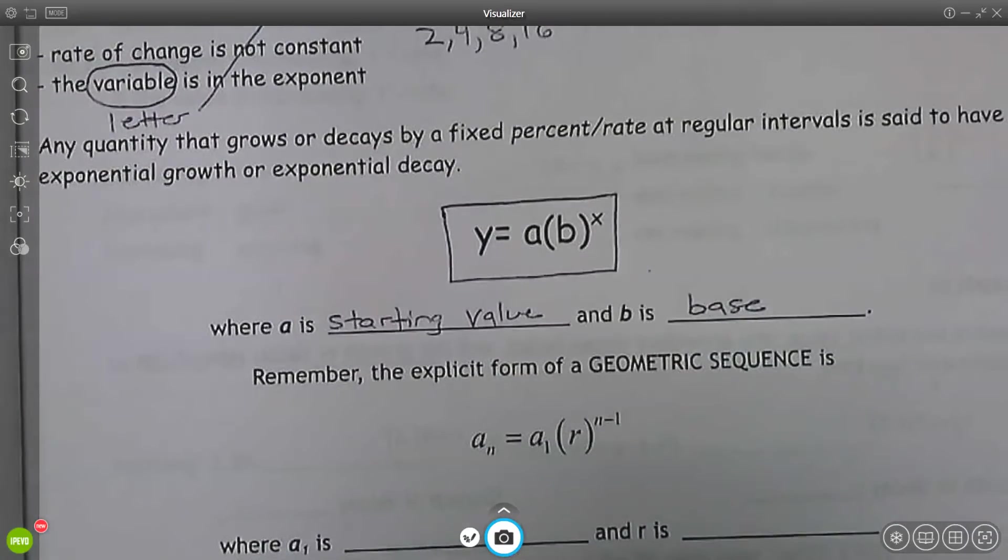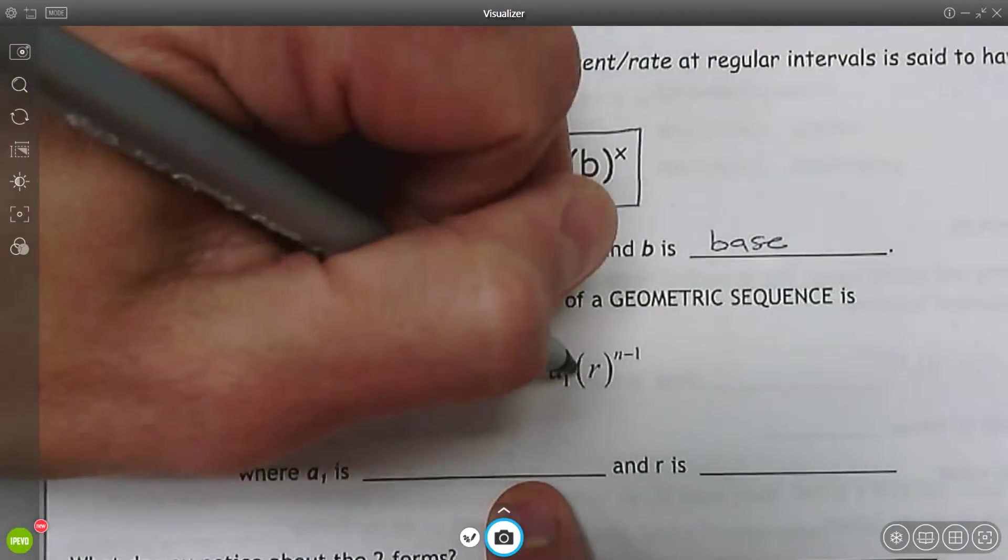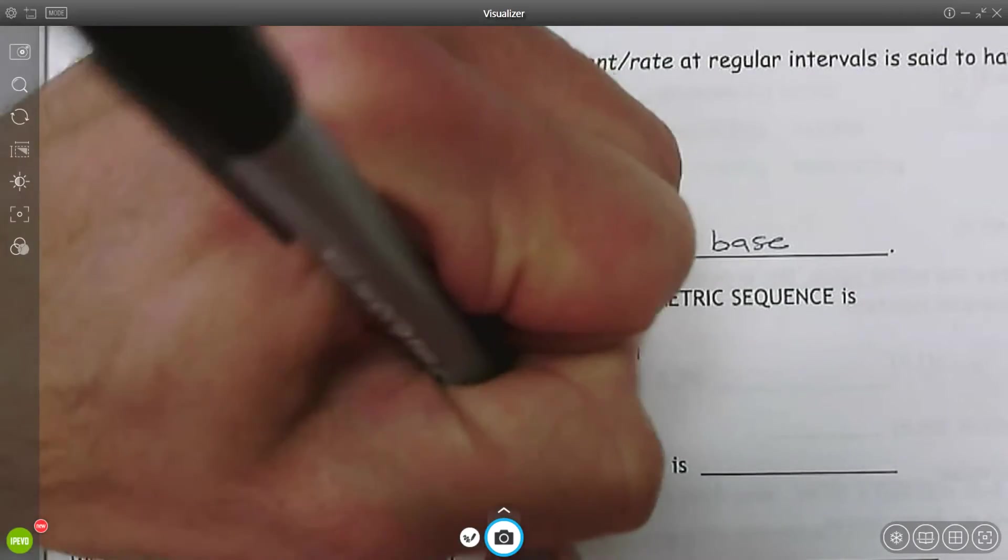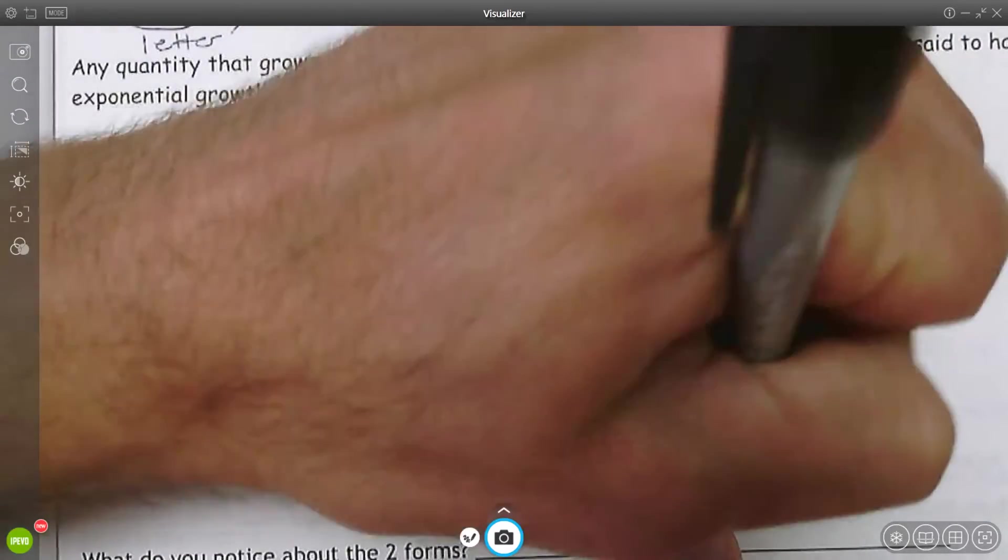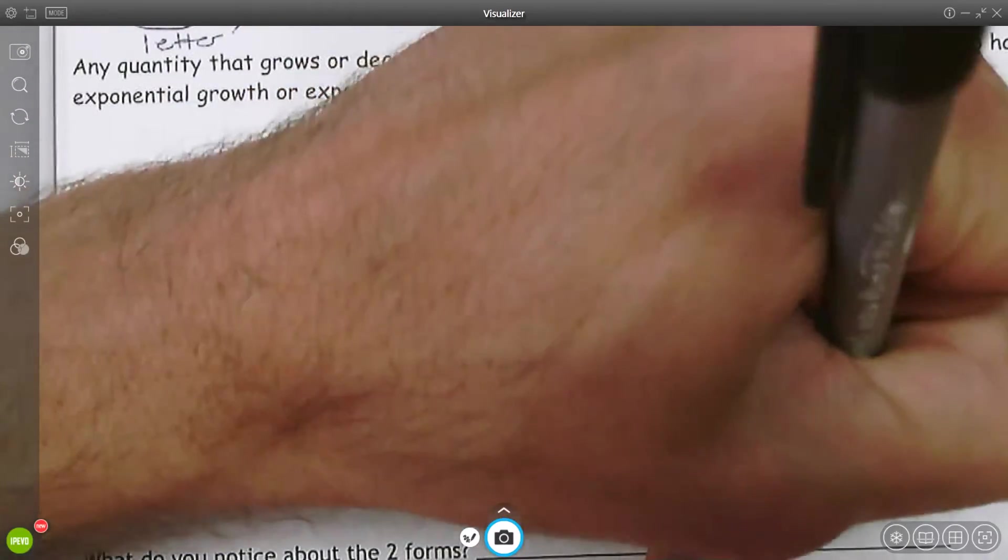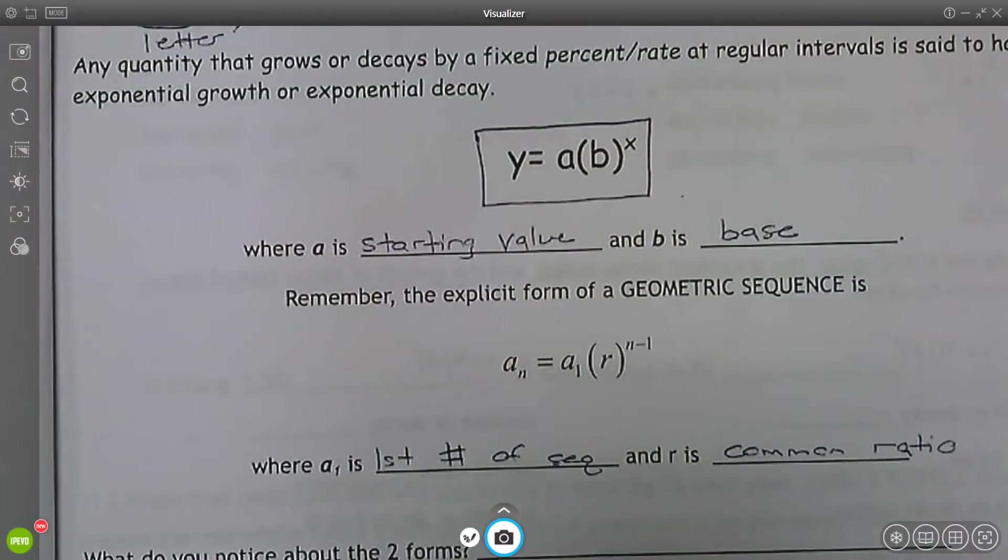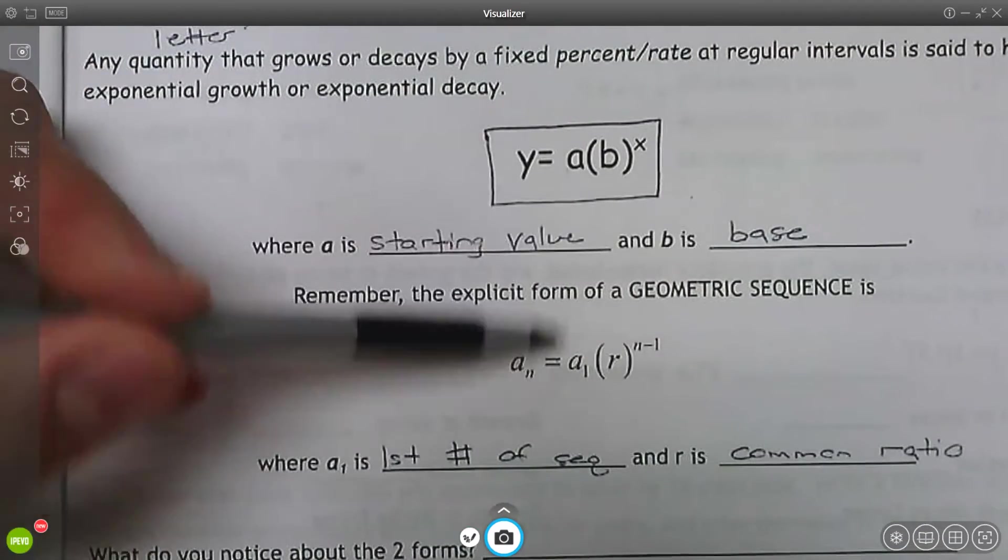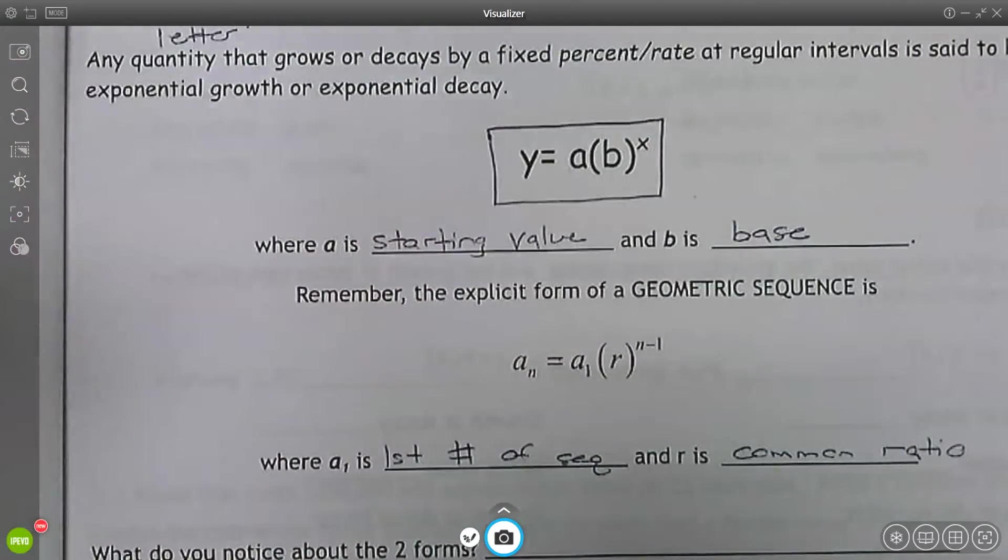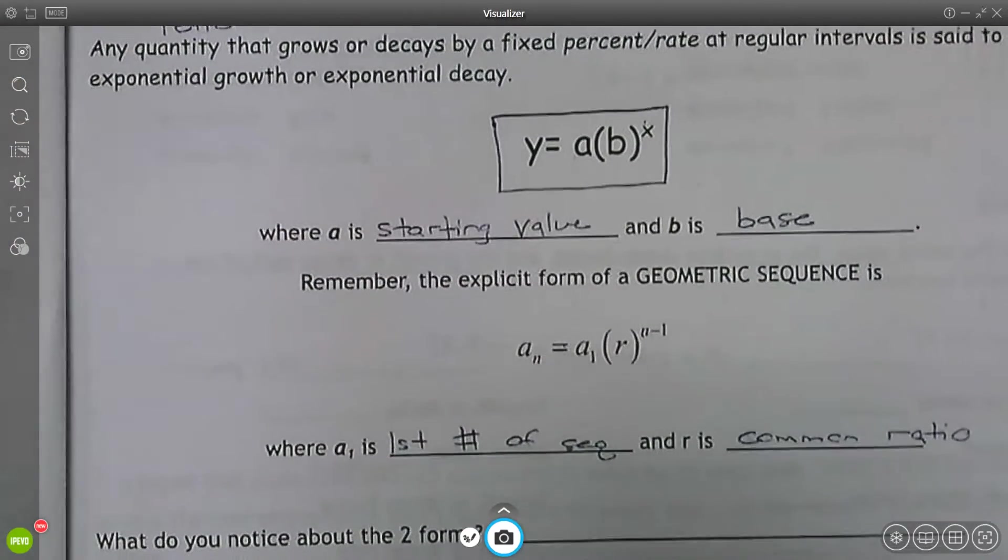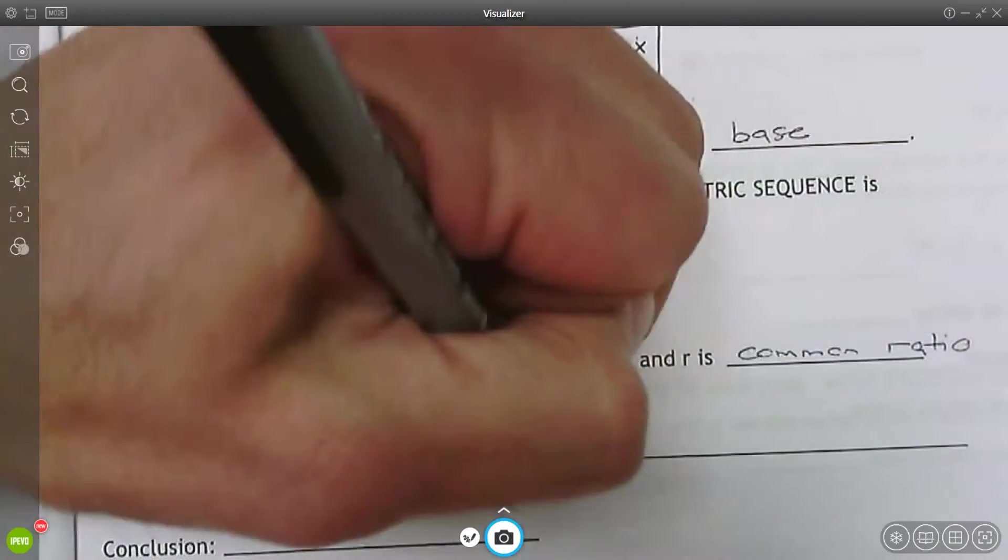So tying this back into geometric sequences, A1 is the first number of the sequence, and R is the common ratio. So very similar. Initial value, first number, common ratio, base. They both have the letter in the exponent. So we notice that the two forms are very similar.